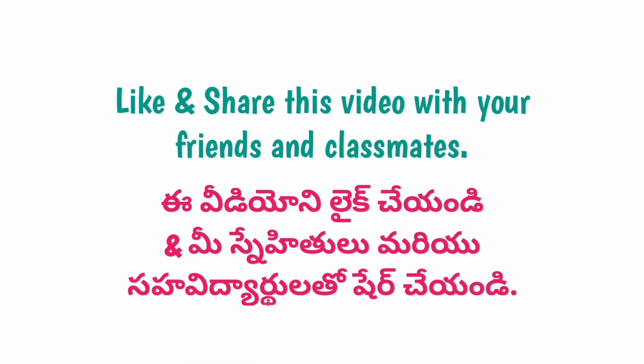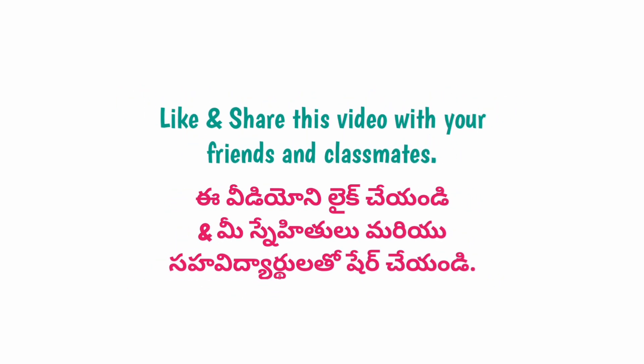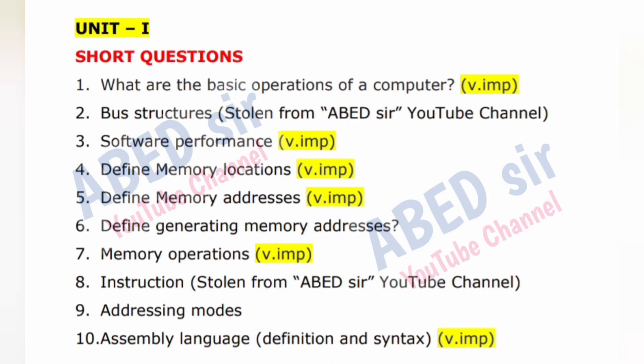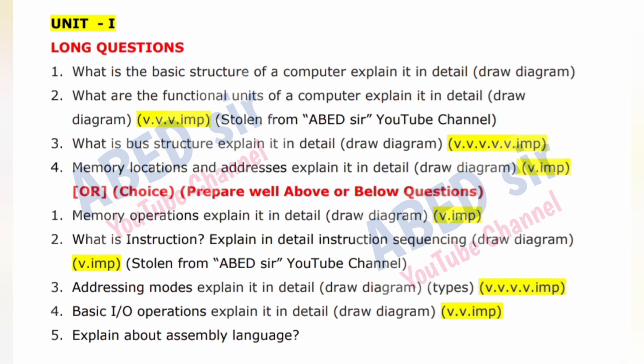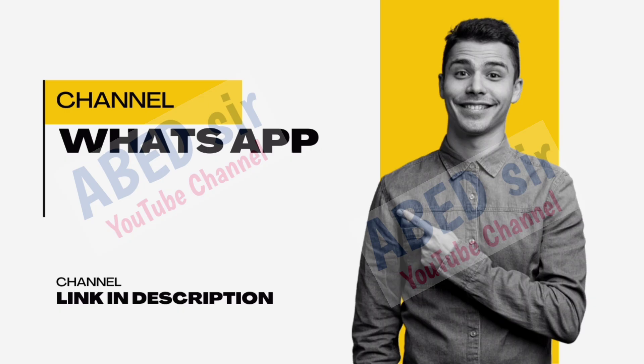On screen you may see each unit's short and long questions one by one. For short questions, write one page answer and include a definition with an example. Based on the short question, draw a diagram, table, or write syntax or formula. For long questions, write 3 to 4 sides of pages and include definition and explanation with an example. Based on the long question, draw diagrams and tables.